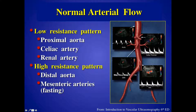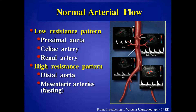That's exactly what we see in the distal aorta, because that distal aorta is providing blood flow to the extremities. As we'll see in some of our other cases, high resistance flow and triphasic waveforms are the normal flow pattern in the peripheral arteries.